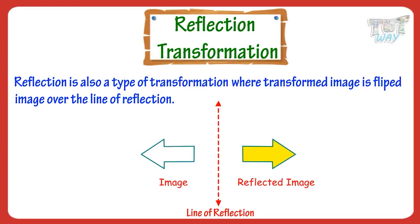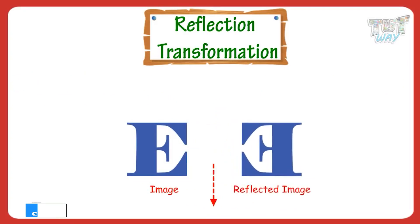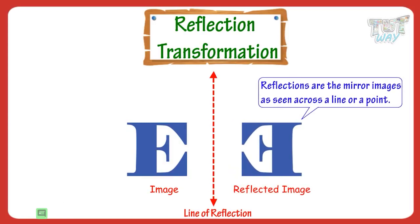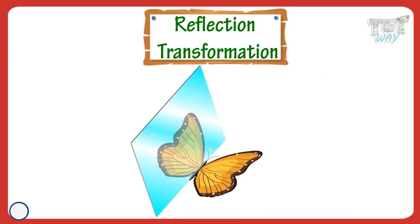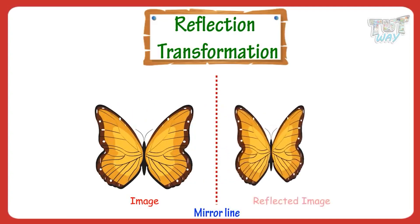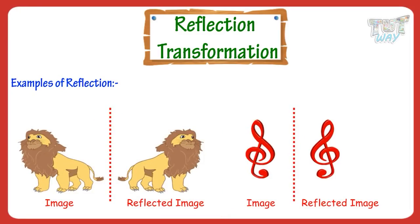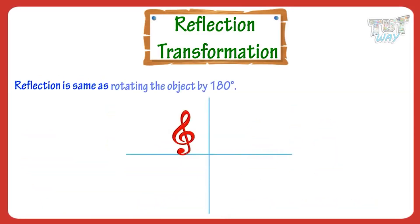Here, this is the flipped or reflected image of an arrow. Here we have an E letter which is reflected. Reflections are the mirror images as seen across a line or a point. If you place a mirror on the line of symmetry of an object, you see the other half in its reflected image. And if you place a mirror on any edge of a 2D figure, you will get its reflected image. Here are more examples of reflected images.